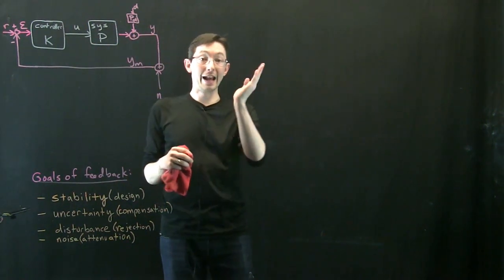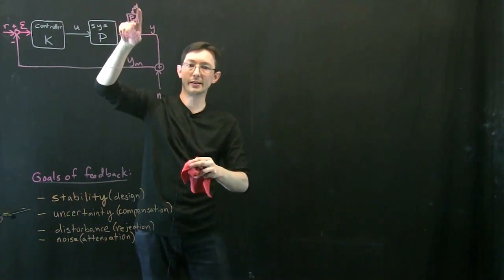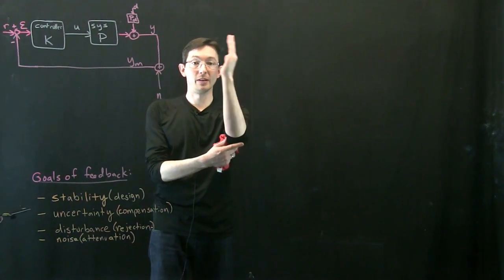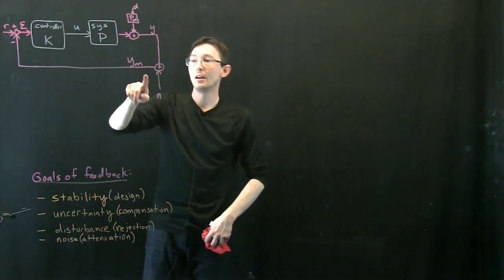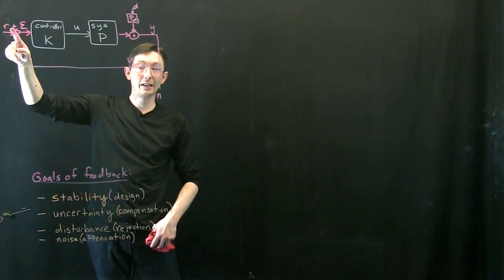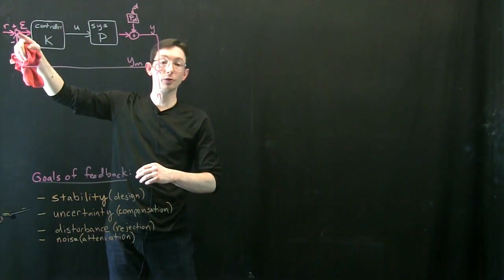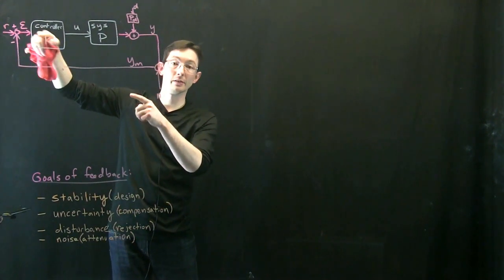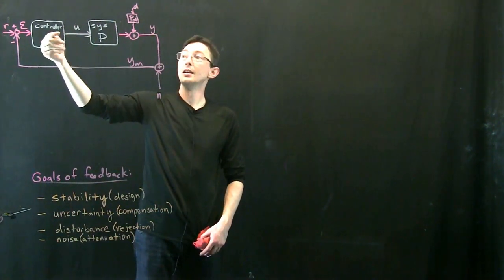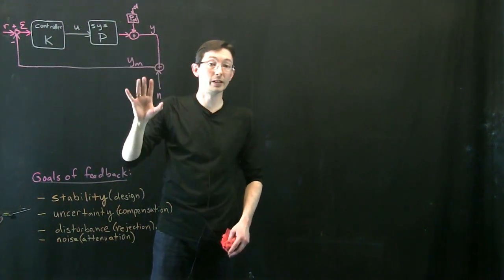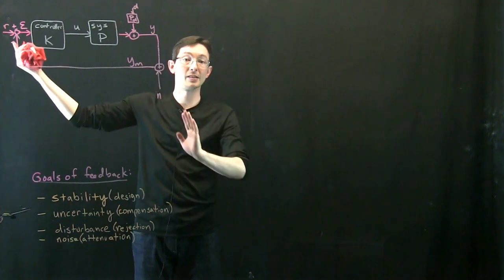Oftentimes this disturbance transfer function will be a lot like the plant transfer function — they might even be identical. So I have some real output y that has disturbances. If this is my pendulum on a cart, maybe there's wind blowing that's disturbing the system. Maybe my measurement has noise on it — I'm measuring the angle but my encoder has some noise. I feed that noisy measurement back and subtract it from my reference. Reference tells me where I want y to be, I subtract the true measured y, and this gives me an error signal. I pass it through the controller, it tells me what my actuation u should be, and hopefully that passes through the dynamics to make y closer to reference, making epsilon small.